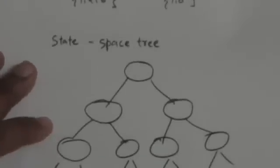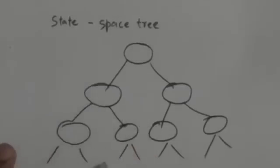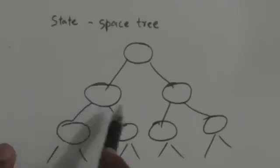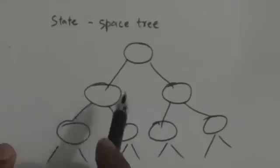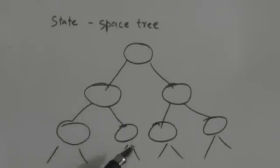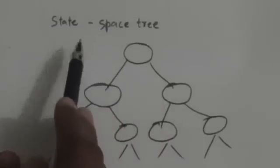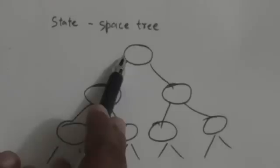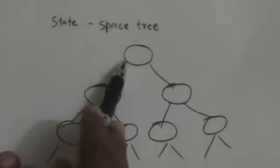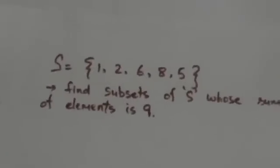We solve the subset sum problem by using a state space tree, which is constructed as a binary tree. Each node of this tree stores a number which is the sum of elements of the subset constructed till now. We start constructing the state space tree from the root. 0 is stored at the root because we have not added any element in the subset yet.